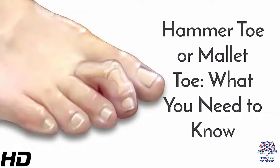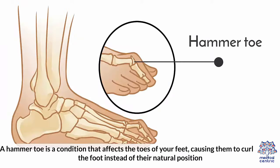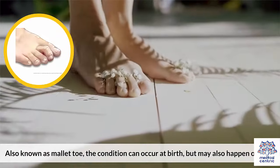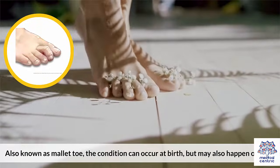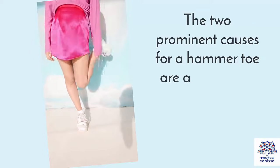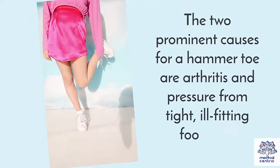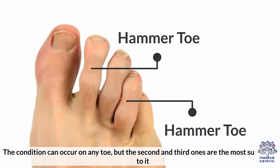Today's topic is hammer toe or mallet toe – what you need to know. A hammer toe is a condition that affects the toes of your feet, causing them to curl towards the foot instead of their natural position. Also known as mallet toe, the condition can occur at birth but may also happen over time. The two prominent causes are arthritis and pressure from tight, ill-fitting footwear. The condition can occur on any toe, but the second and third ones are the most susceptible.